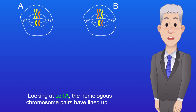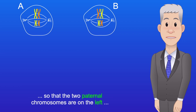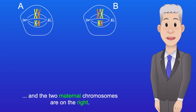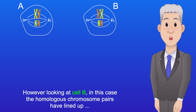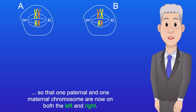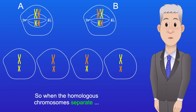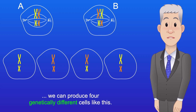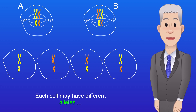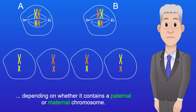Looking at cell A, the homologous chromosome pairs have lined up so that the two paternal chromosomes are on the left and the two maternal chromosomes are on the right. However, looking at cell B, the homologous chromosome pairs have lined up so that one paternal and one maternal chromosome are on both the left and right. So when the homologous chromosomes separate, we can produce four genetically different cells, each with different alleles depending on whether it contains a paternal or maternal chromosome.